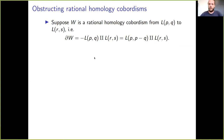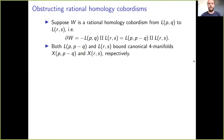The boundary of W consists of the disjoint union of minus L(p,q) together with L(r,s). And minus L(p,q) — that's a fact about lens spaces — equals the lens space L(p, p minus q). Lens spaces have the nice property that with both orientations they bound canonical 4-manifolds X(p, p-q) and X(r,s) respectively.